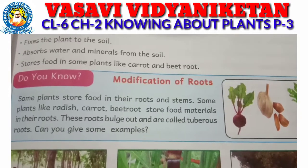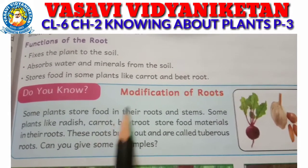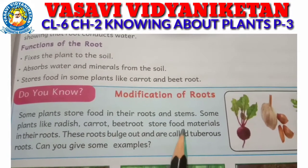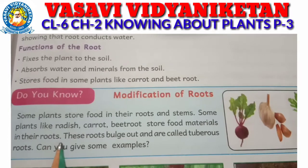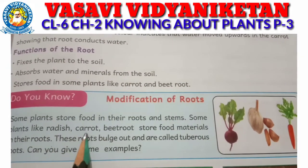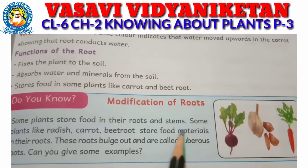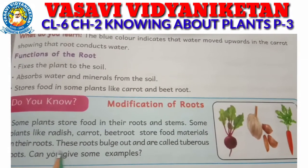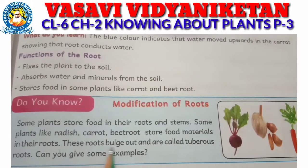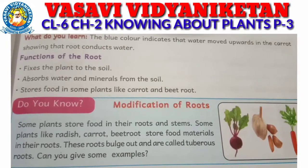Some plants store food in their roots and stems. Some plants like radish, carrot, and beetroot store food materials in their roots. These roots bulk out and are called tuberous roots.